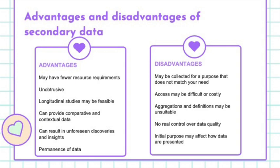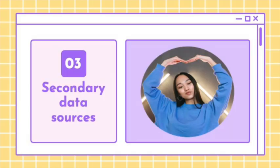However, there are disadvantages of using secondary data. The main challenge is to ensure that the data fits your research objective. Some disadvantages may include that the data will not match your need. Some databases require you to pay to access them, so it can be costly. The definitions of the secondary data may not suit your current research because it was conducted for another purpose. This leads to the further disadvantage that you will not have real control over the data quality, and the initial purpose of the data being collected is not related to your research.